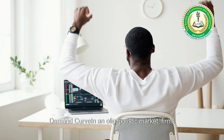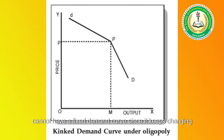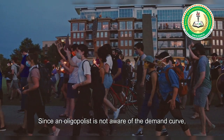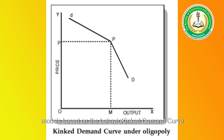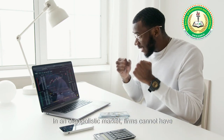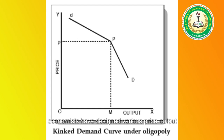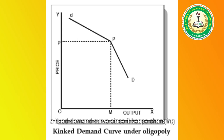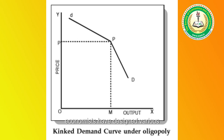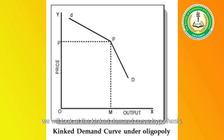We will try to understand the kink demand curve in an oligopolistic market. Firms cannot have a fixed demand curve since it keeps changing as competitors change the price and quantity of output. Since an oligopolist is not aware of a demand curve, economists have designed various price output models based on the behavior pattern of other firms in the industry. In this article, we will look at the kink demand curve hypothesis.